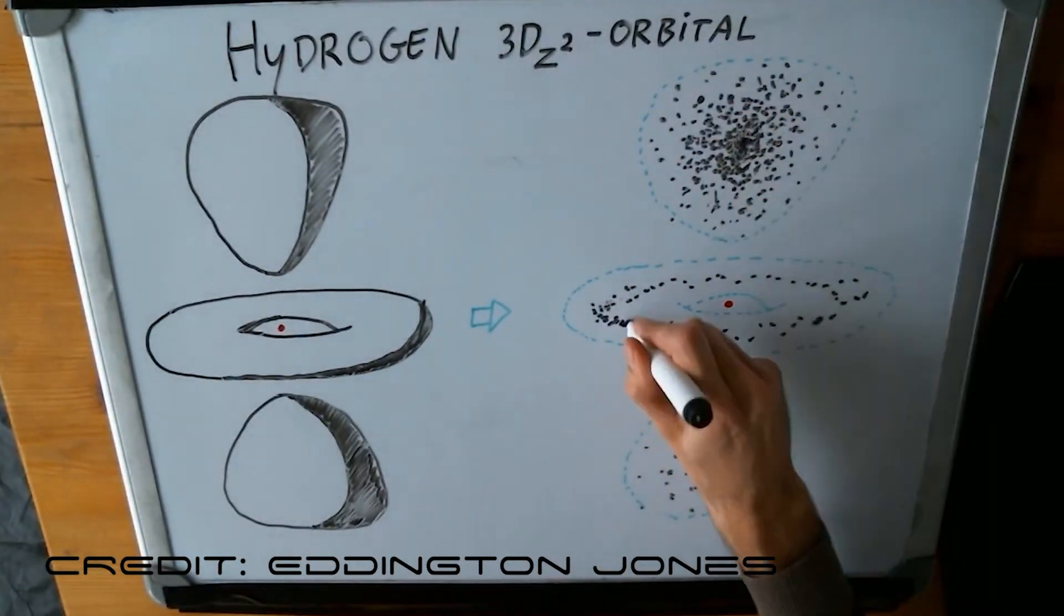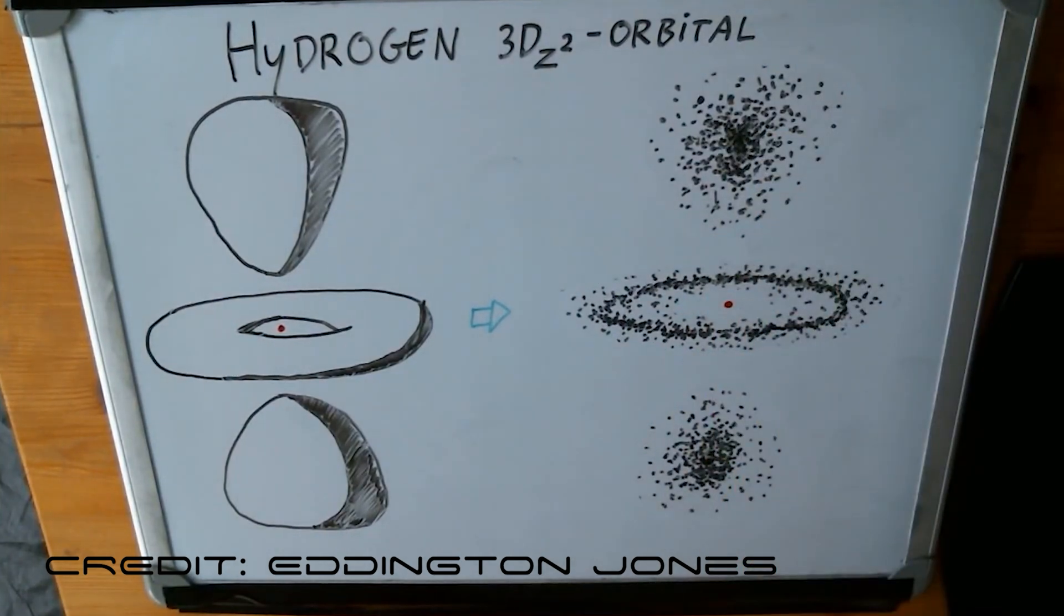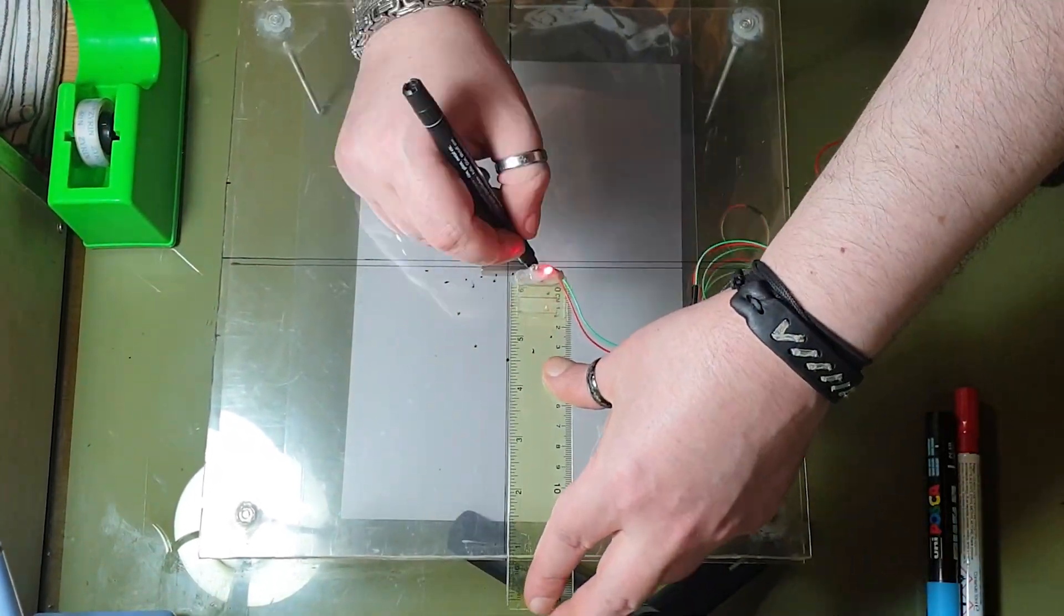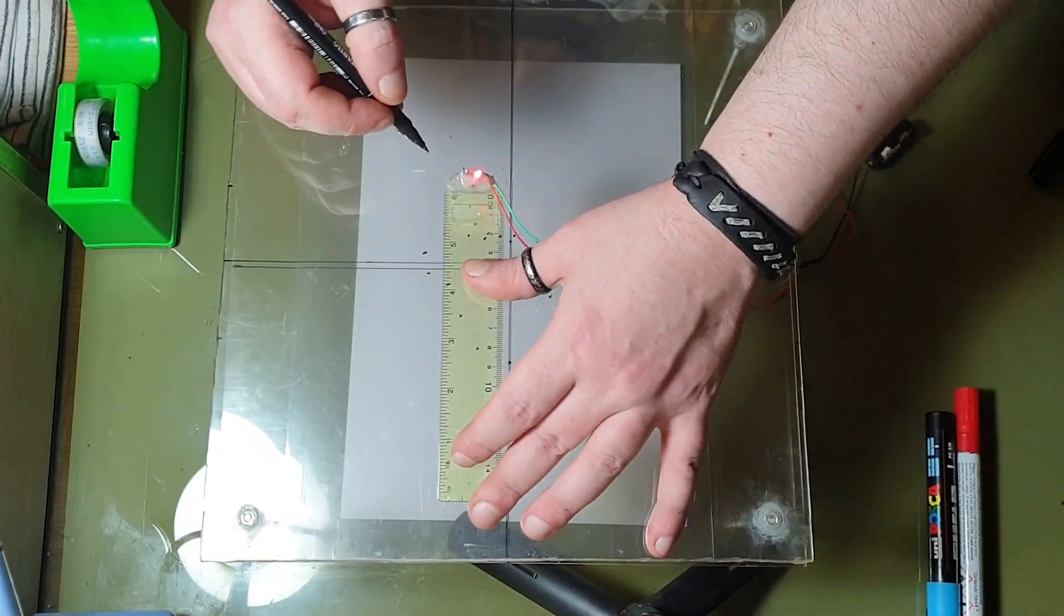Just as atomic orbitals are not smooth surfaces, but clouds of points, magnetic orbitals, too, are built from discrete dots, collected one by one. It is their sum that constructs the figure.